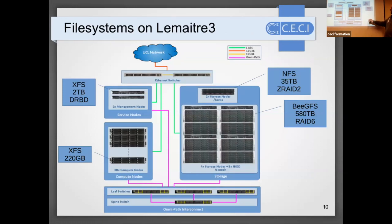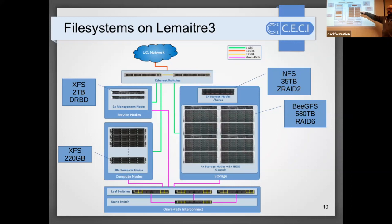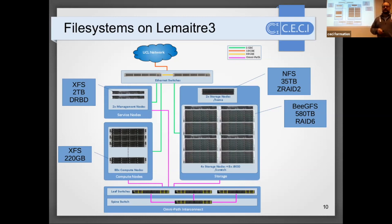Here is a schematic of the Method3 cluster at VCL. There's an NFS of 35 terabytes for home storage used by all compute nodes, which each have a local XFS file system. Then there's the global scratch - a large storage with four servers offering a GPFS file system of nearly 600 terabytes (scaled down to about 400 due to hardware failures). It's important to know which type of file system to use for which type of data or usage.